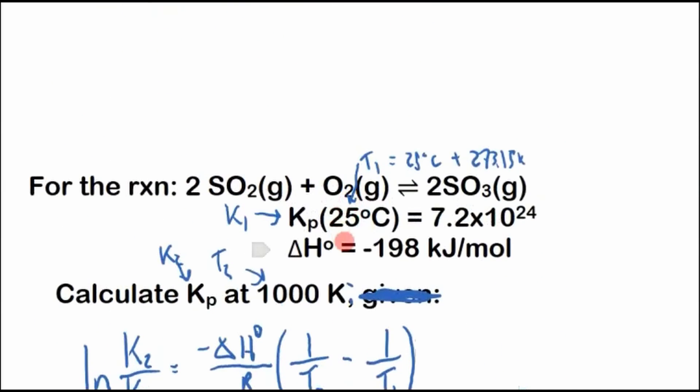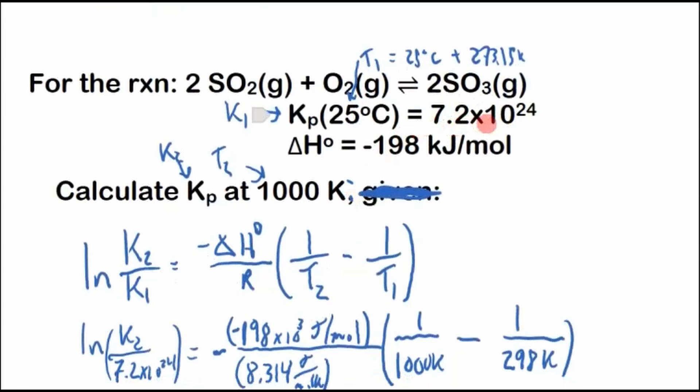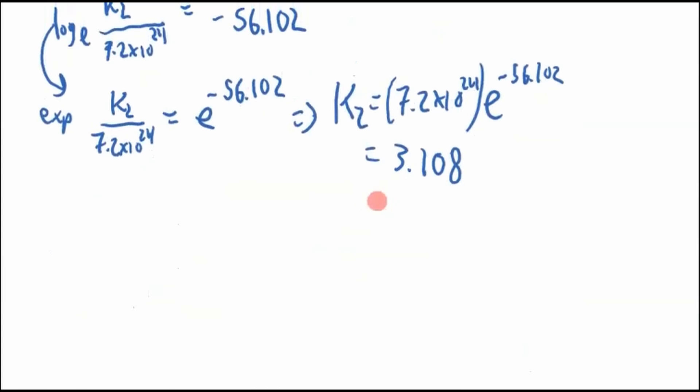Let me check how many sig figs we have. We have two sig figs here, two sig figs. So we're down to two sig figs, so that's okay, 3.1. So K2, this would be 3.1 at 1000 Kelvin. It's unitless, equilibrium constants are unitless.